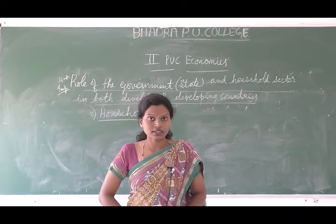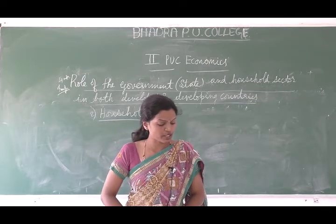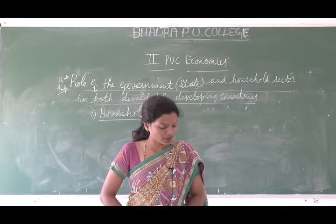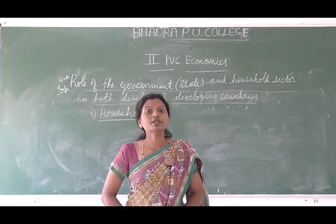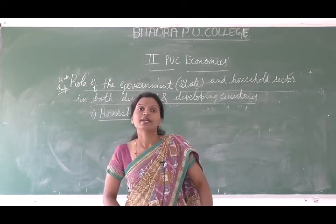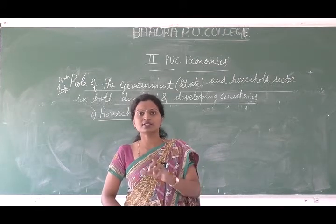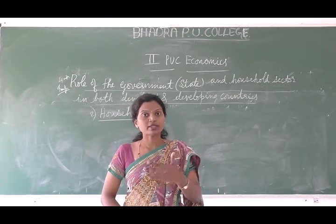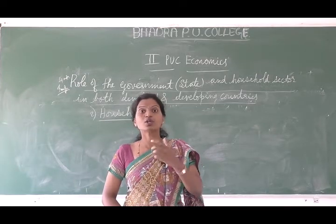Producers — in other words, they are the suppliers of the raw materials. So we can say that the families or the individuals who supply factors of production to the firms, and which buy the goods and services from the firm, is called household. Companies need different factors of production — land, labour, machinery — these are the different suppliers of factors of production. They can be called as household.